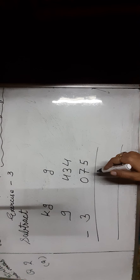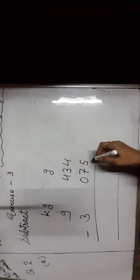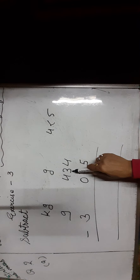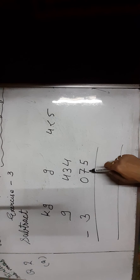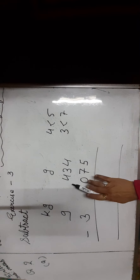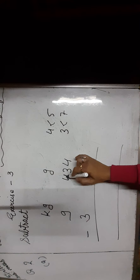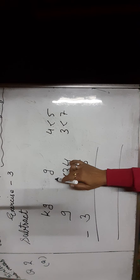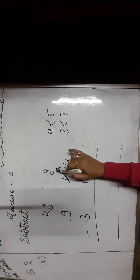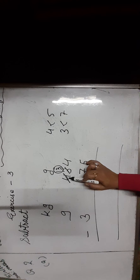Start from the grams column at the 1's place: 4 minus 5. As 4 is smaller than 5, we move to the next digit: 3 minus 7. Here 3 is also smaller than 7, so we move to the 100's place digit, which is 4. Since 4 minus 0, we borrow 100 grams to make 13 and 4 becomes 3.